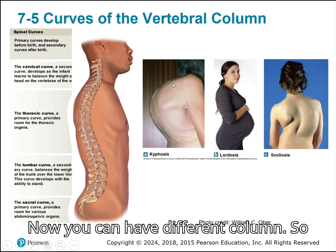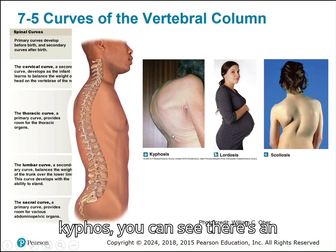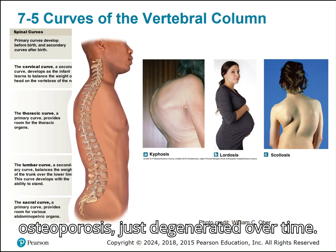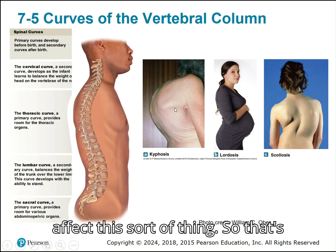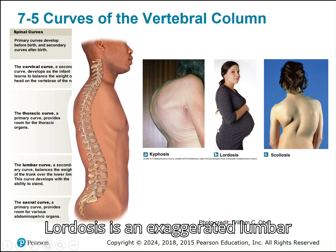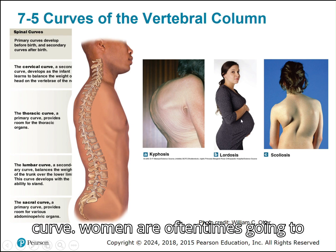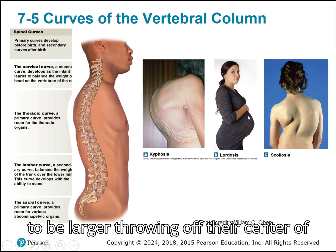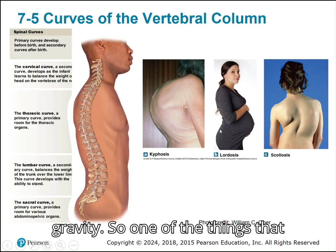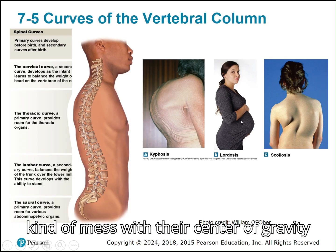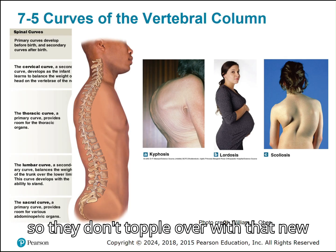You can have different disorders of the vertebral column. Kyphosis is an exaggerated thoracic curve — very exaggerated. This can happen because of osteoporosis, degeneration over time, or poor posture. That's kyphosis, or a hunchback. Lordosis is an exaggerated lumbar curve. Pregnant women often suffer from this because the larger belly throws off their center of gravity, and the back compensates with that exaggerated lumbar curve so they don't topple over.